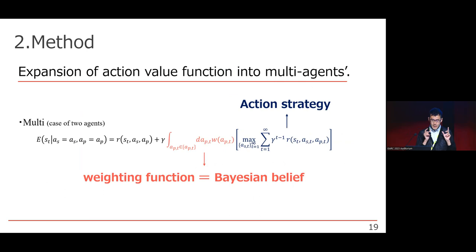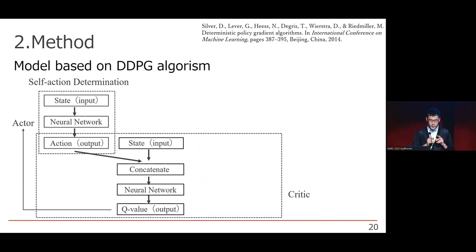The combination of right assumption of Bayesian belief and the action strategy enables the agent to choose a truly good choice for everyone.